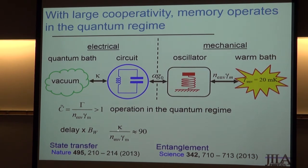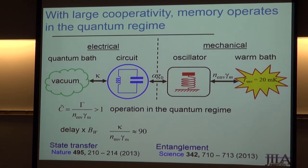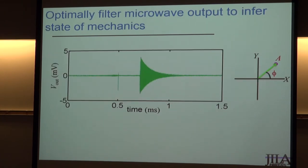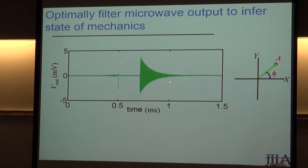The other thing you care about is: how long can you store information compared to how long it takes to read and write — that's basically the delay-times-bandwidth product of your memory. For us right now that's around 100. The quantum decoherence rate limits our storage time, and the fastest we can imagine moving information out is set by the electrical circuit decay rate. With these parameters, we've done state transfer and two-mode entanglement.